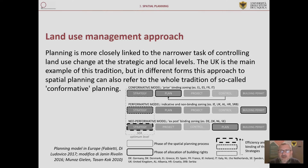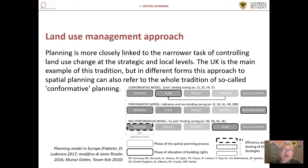In the Land Use Management Approach, planning is more closely linked to the narrower task of controlling land use change at the strategic and local levels. The UK is the main example of this tradition, but in different forms this approach to spatial planning can also refer to the whole tradition of so-called conformative planning.